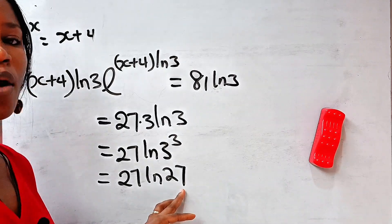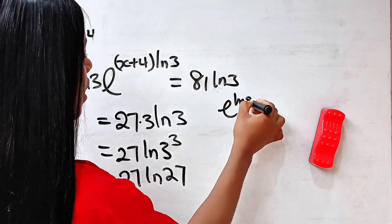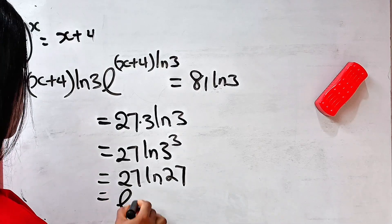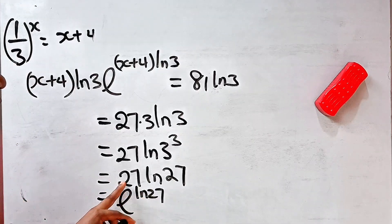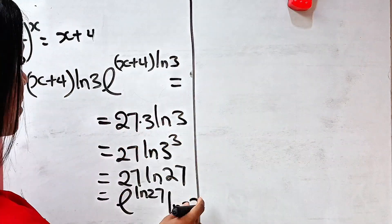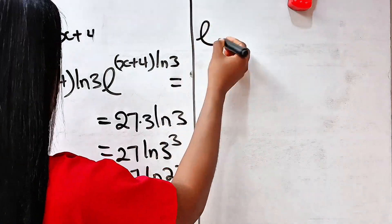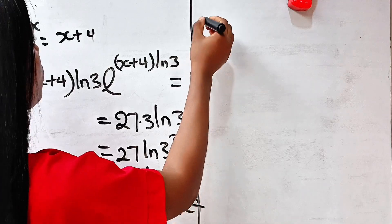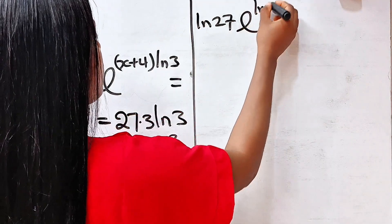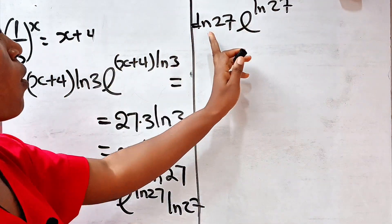Now we have the same thing — 27 and ln 27 — but we still need to introduce e. Since e^(ln A) equals A, we can write 27 as e^(ln 27). So the right-hand side becomes ln 27 times e to the power of ln 27.